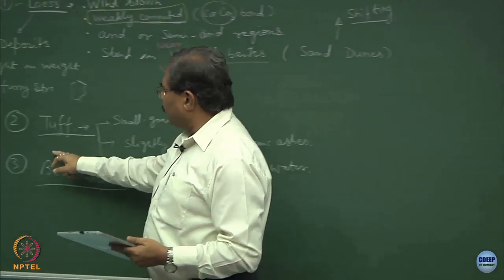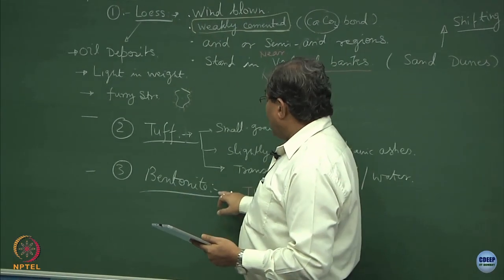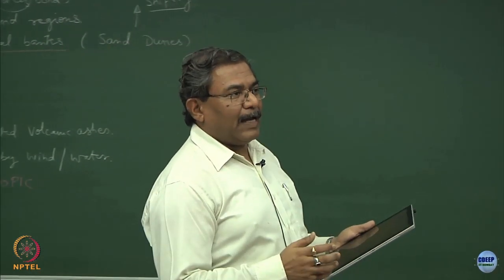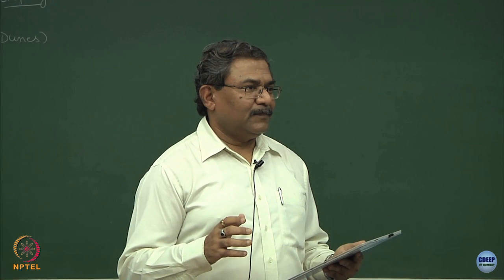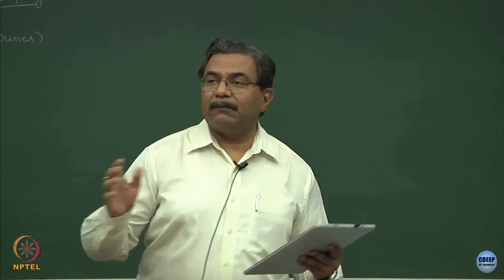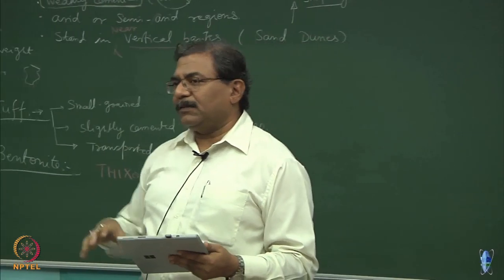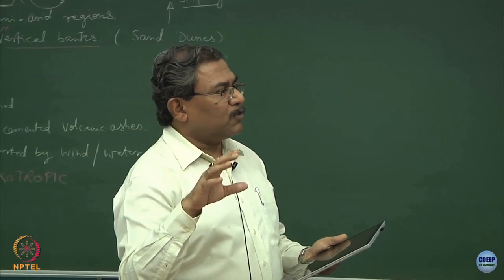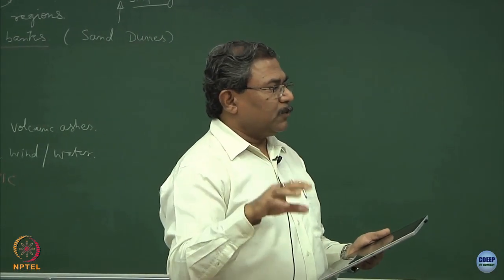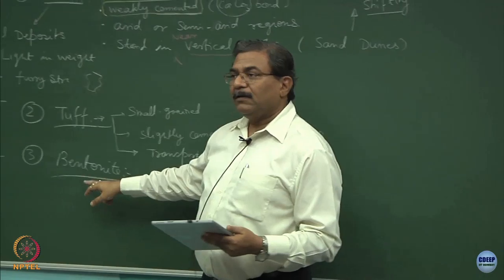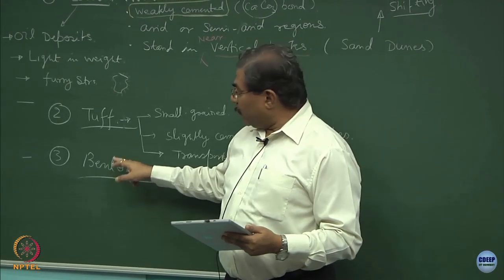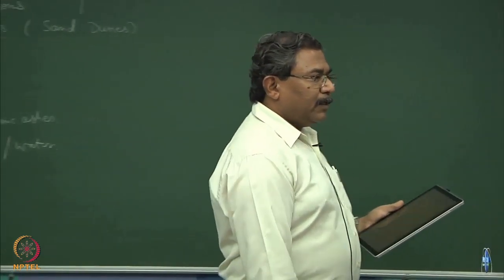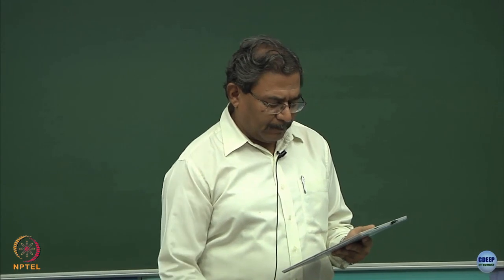Montmorillonitic minerals have always been termed as unwanted materials in conventional geotechnical subjects. Those from the Vidarbha region, central Maharashtra, MP, or Karnataka must be seeing black cotton soil — the constituent of black cotton soil is a cousin of bentonite. But by virtue of its thixotropic effect, this material has become a boon in the nuclear industry.